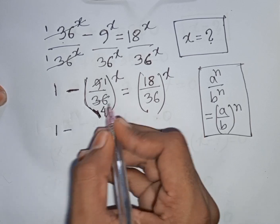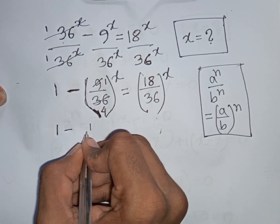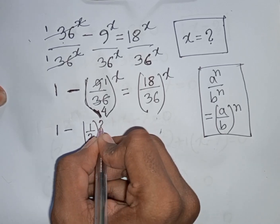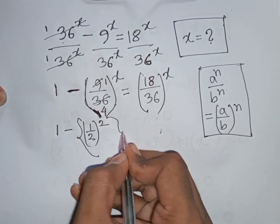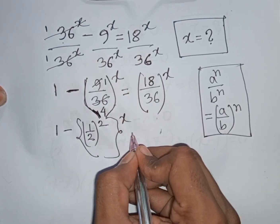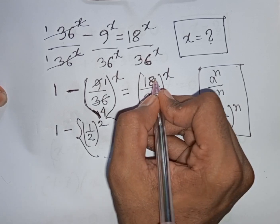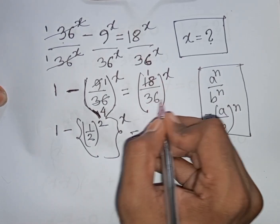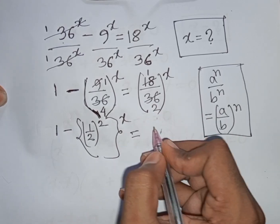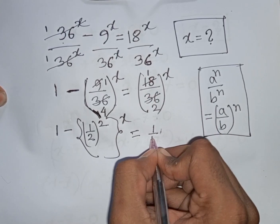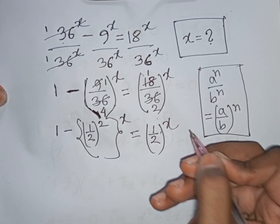Now, (1/4) to the power x can be written as (1/2)² to the power x, which equals (1/2) to the power 2x. So we have (1/2) to the power 2x minus (1/2) to the power x.